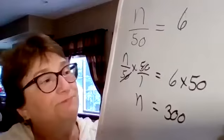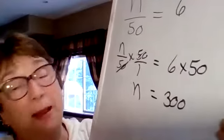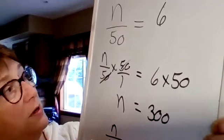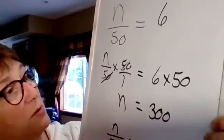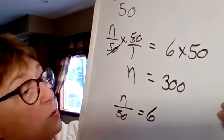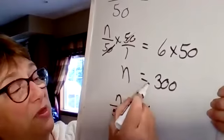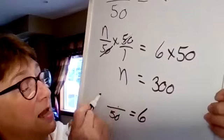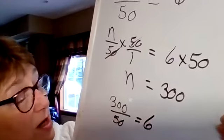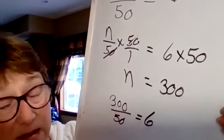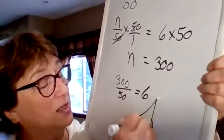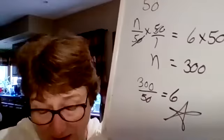Let's do the double check. The best part of all is a check. n over 50 equals 6. We're going to substitute in for that variable. We figured out that the n was the same thing. It was equal to 300. So let's erase that and put that in there. Is 300 divided by 50, 6? Yes, indeed it is. A star for us. Very good.